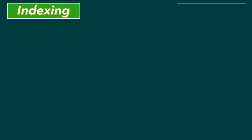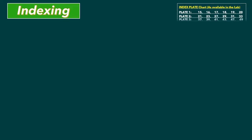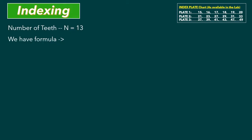Now I am going to explain the third way to find the indexing. This method is used when the first or second method does not work. Here I will use the number of teeth as 13, with the same formula 40 over N. So 40 over 13 equals approximately 3.07. We have a remainder of 0.07, and we need to find the index plate that allows us to take 0.07 of 360 degrees.